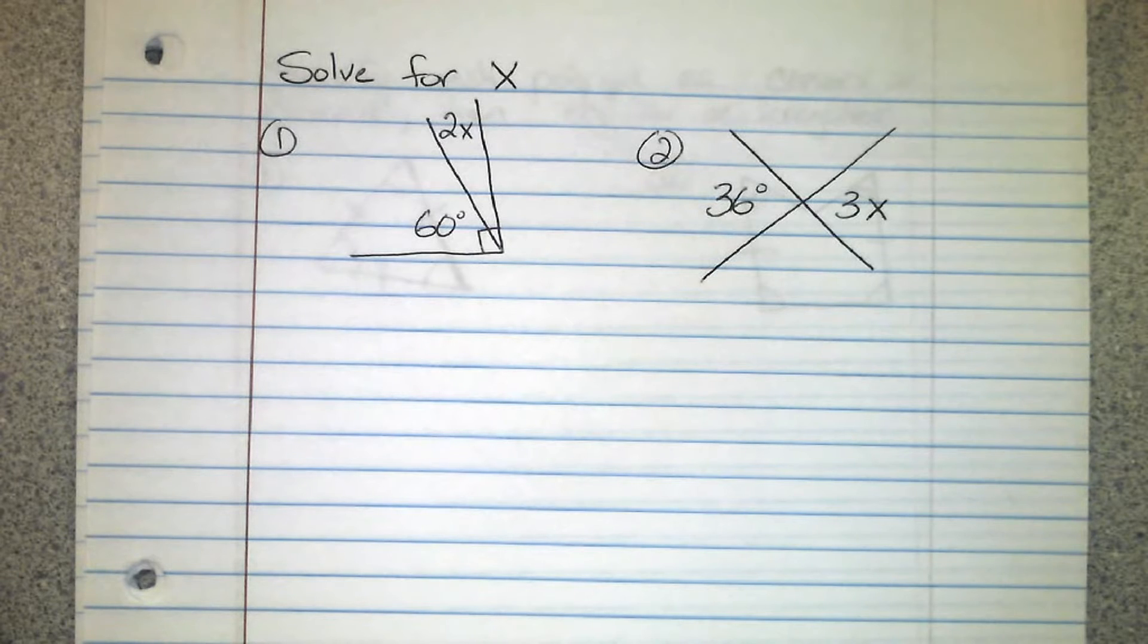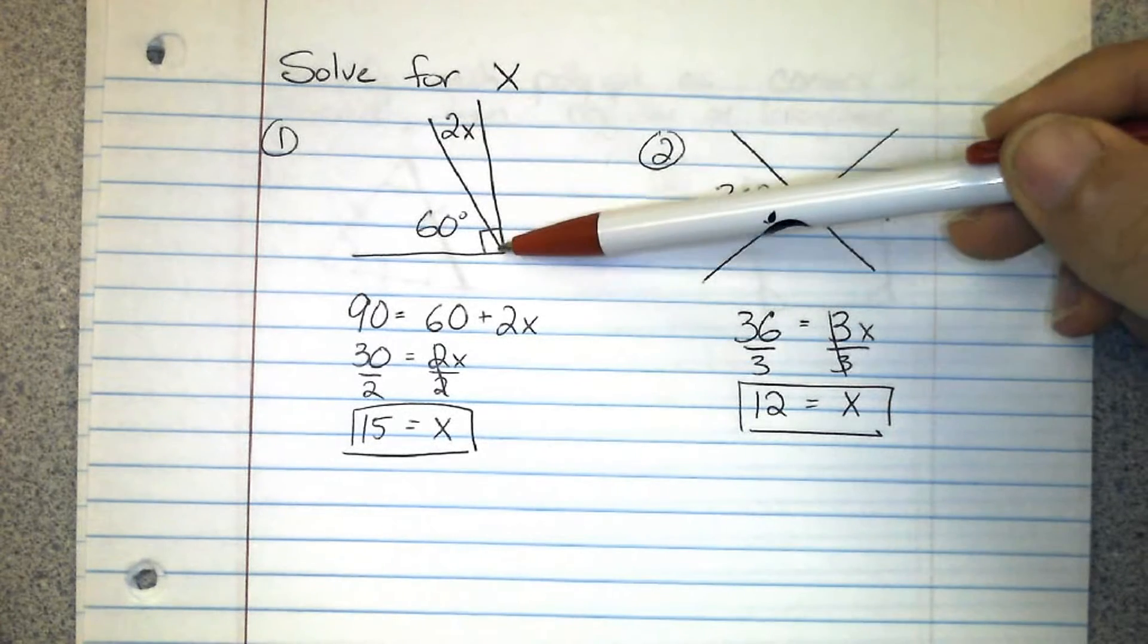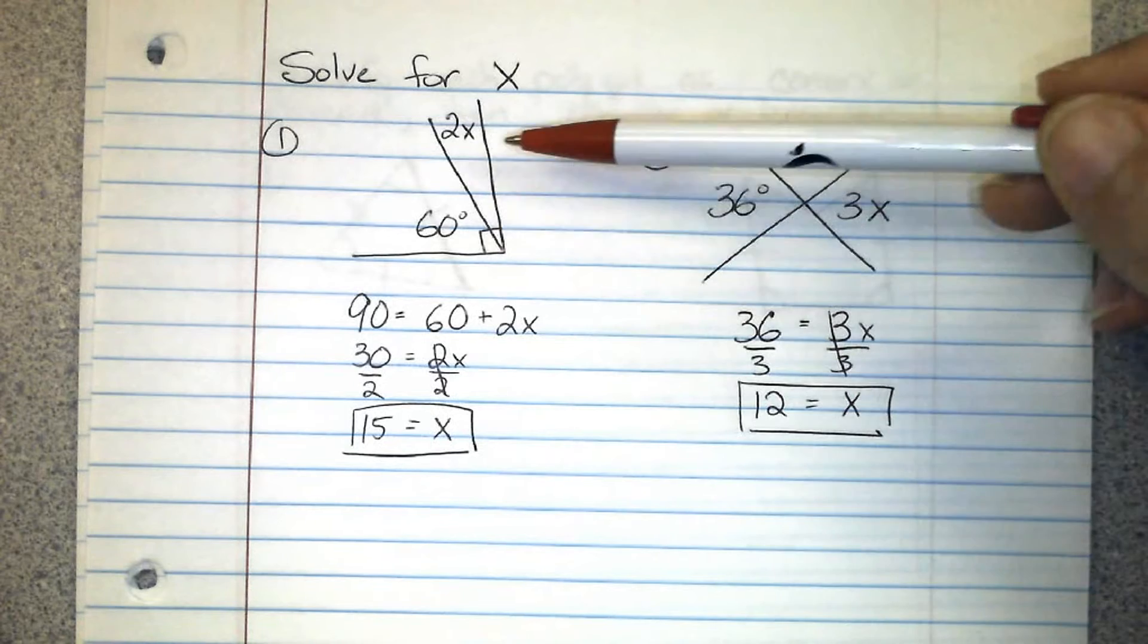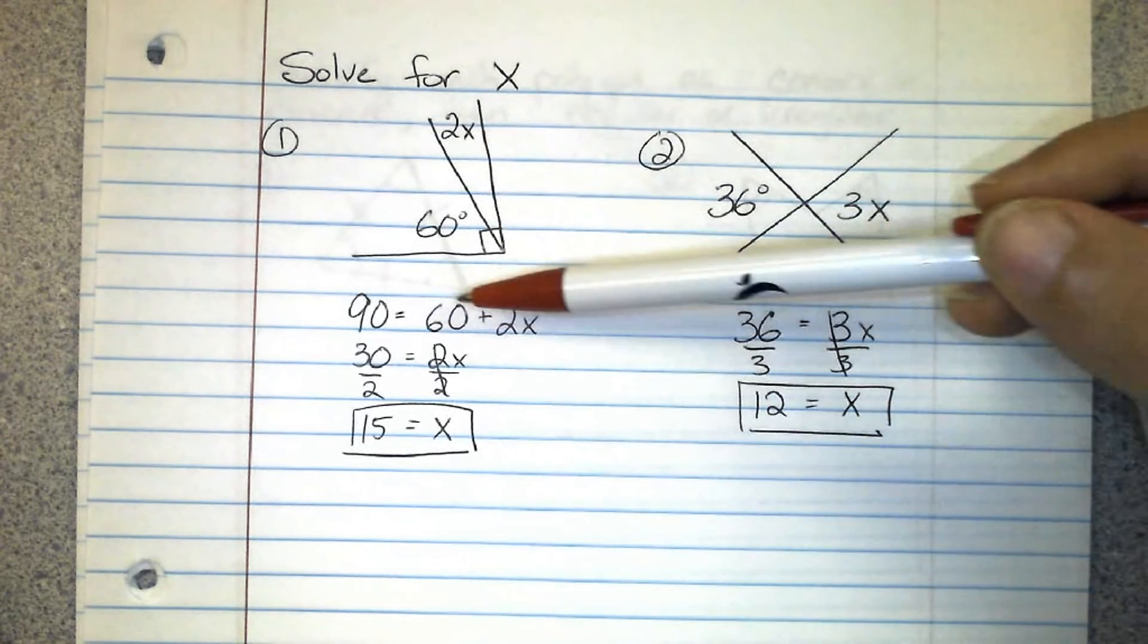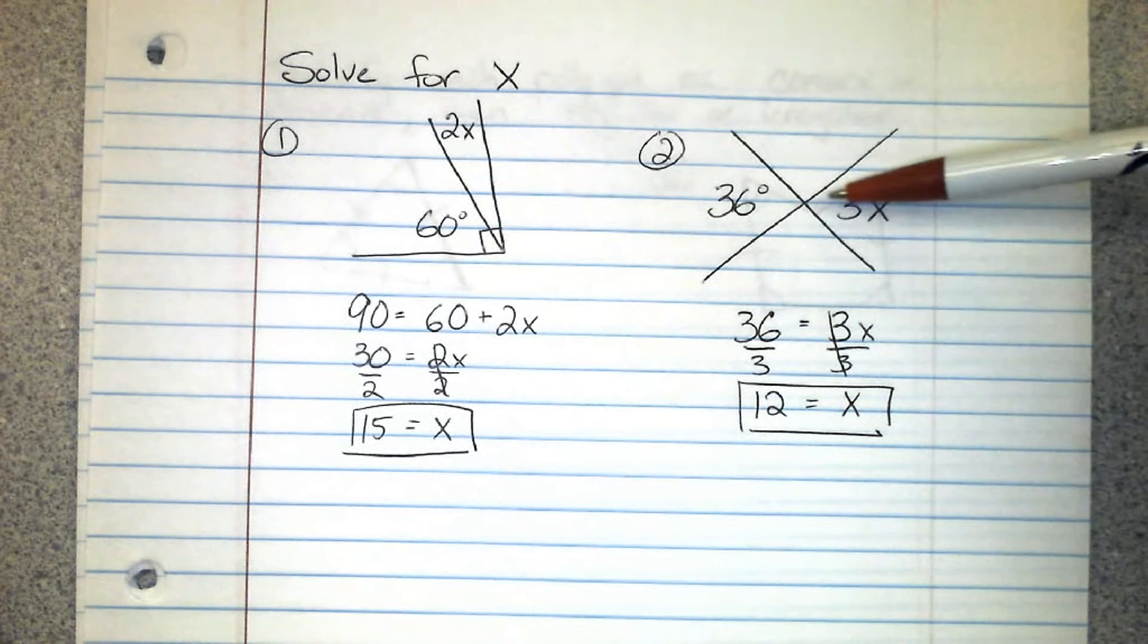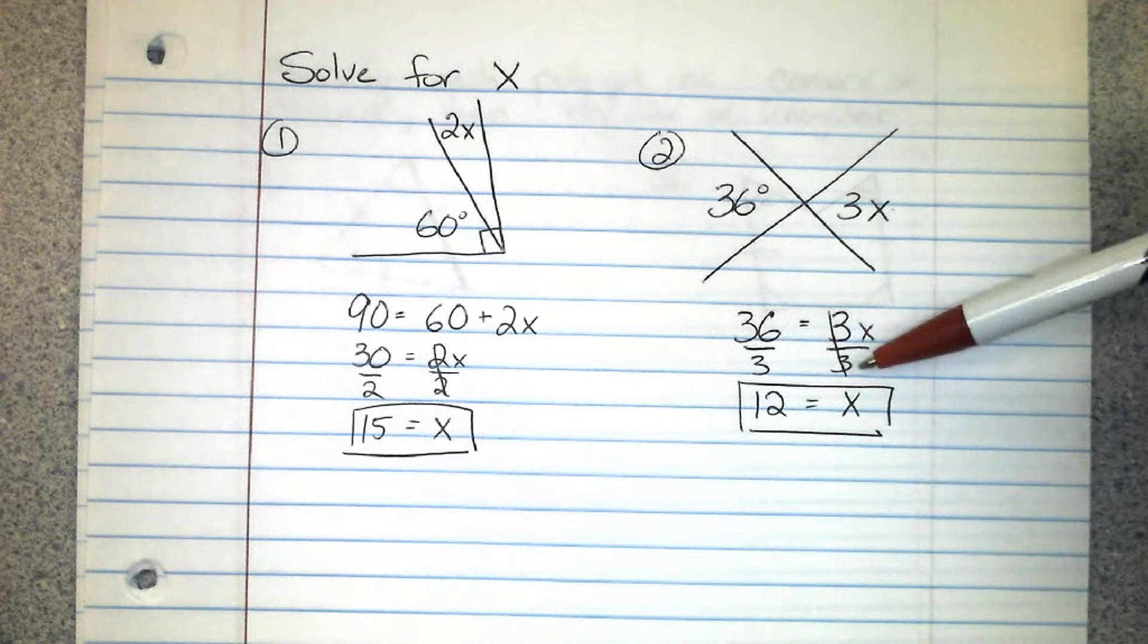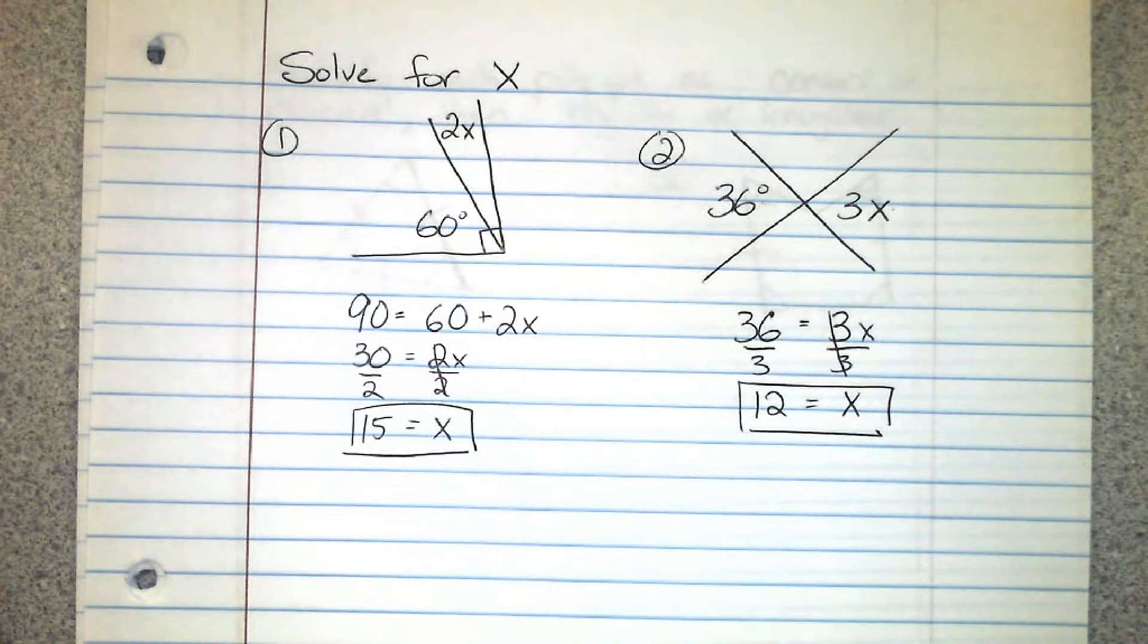Alrighty, try to solve for x in both of these. So right here you can tell by this box that we have a 90 degree angle, so that means that these two parts together have to add up to 90 degrees. So 60 plus 2x equals 90. We go ahead and solve and we end up with 15 equals x. Here we have vertical angles. Remember vertical angles are congruent, so 36 degrees equals 3x. So all we do is divide by the coefficient and find out that x equals 12.